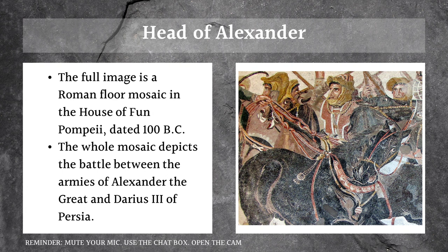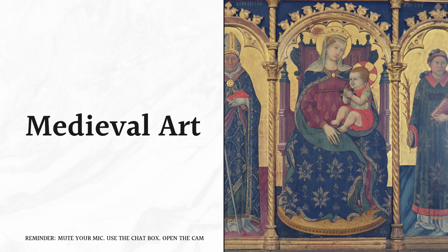The full mosaic depicts the battle between the armies of Alexander the Great and Darius III of Persia. You can search it on Google to see the full image, as it is very large. The cropped image here lets you see that it is indeed a mosaic — made of small pieces of stones and shells combined to create the image. That concludes classical art.